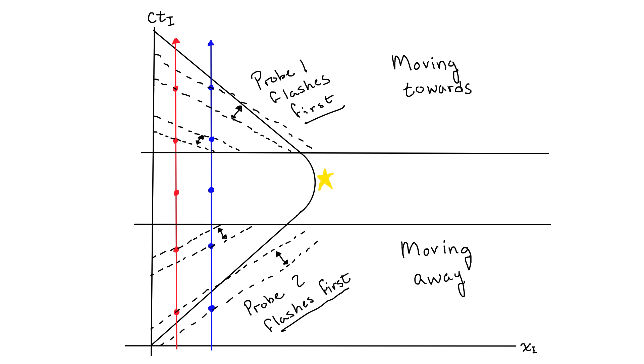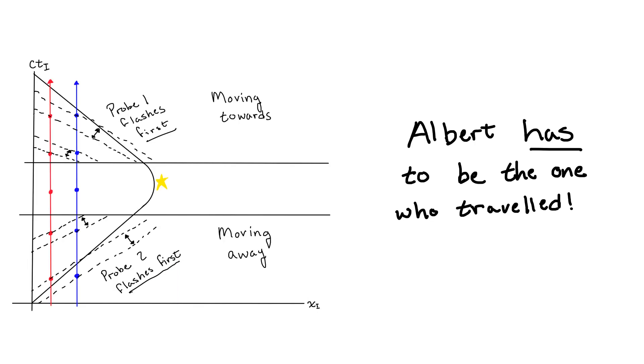Since the distance between the probes never changes, and the flashes are always at the same intervals, this can only mean that Albert traveled in two different directions, so he has to be the one who took the trip, and will be younger when he comes back.